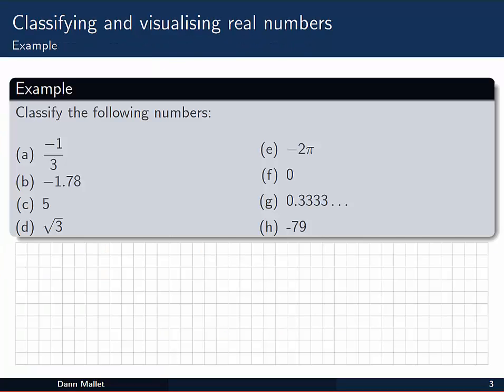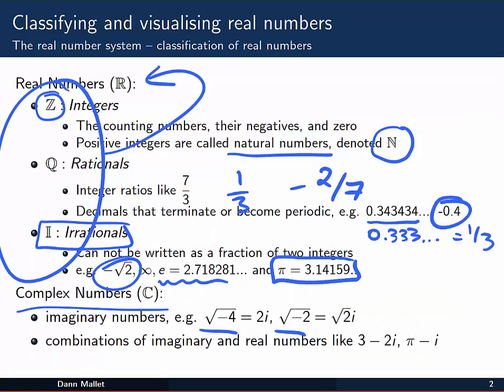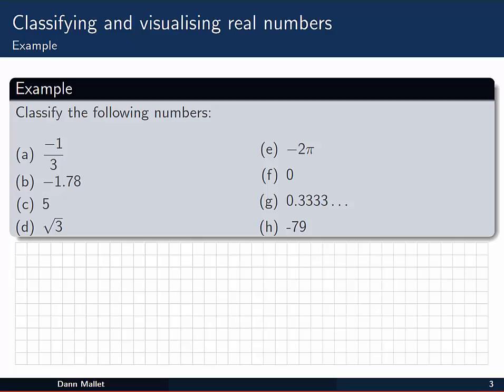Alright, let's take a look at an example, and we're going to classify these following eight numbers. Now what we're going to find is some of these only fit into one of the three, four classifications from back here: complex numbers, irrationals, rationals and integers, or we might add in naturals as well. But others will actually fall into a number of categories. So let's have a go at it.